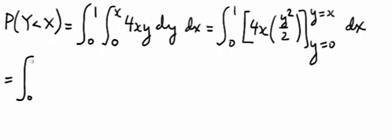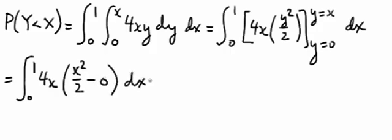So now evaluating that we get 4x, when y is equal to x we get x squared over 2, and when y is 0 we get 0. So that simplifies to the function, oops let me erase that, that should be a 2.